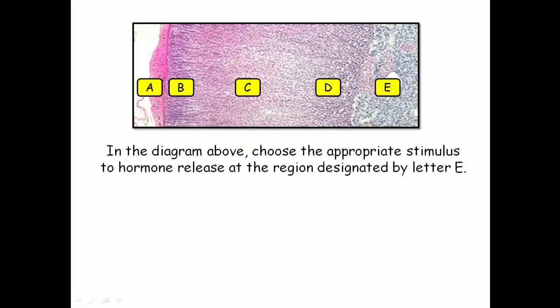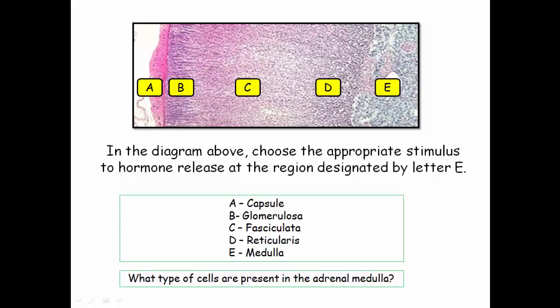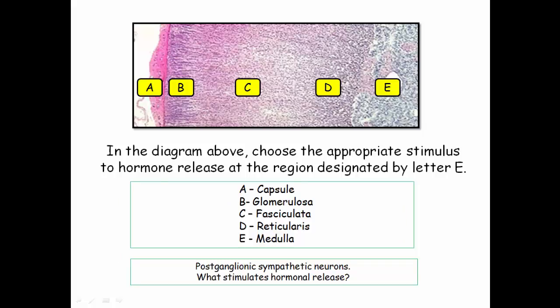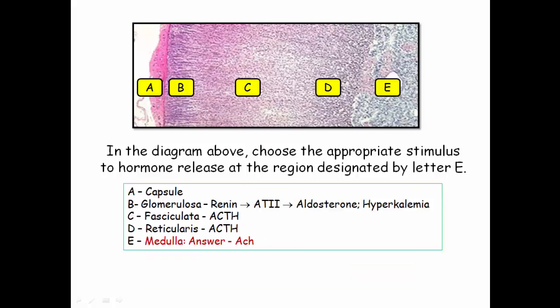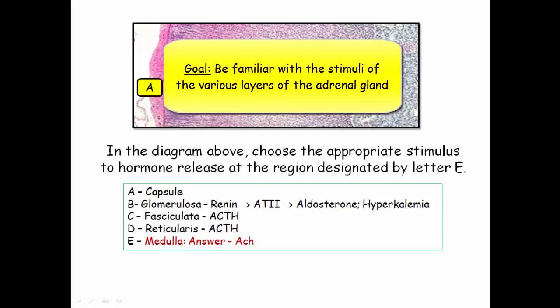Let's work through some questions on adrenal disorders. The NBME loves a diagram of the adrenal gland histology — you should be acquainted with its normal appearance including the medulla, which is unique. The cells in the medulla are described as postganglionic sympathetic neurons, innervated by cholinergic preganglionic sympathetic neurons. The stimulus for hormonal release from the medulla is acetylcholine. Note also that aldosterone release is independently stimulated by hyperkalemia.